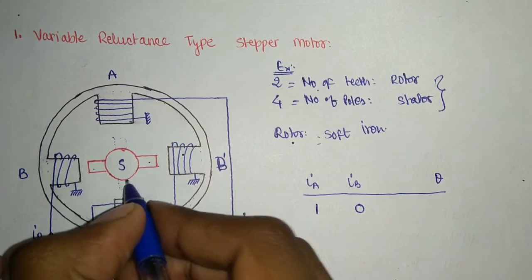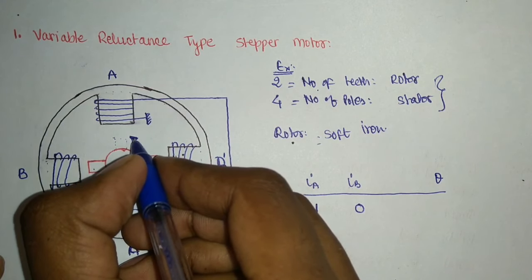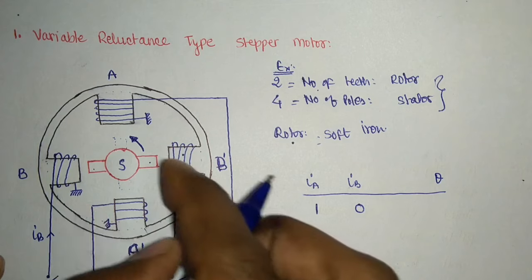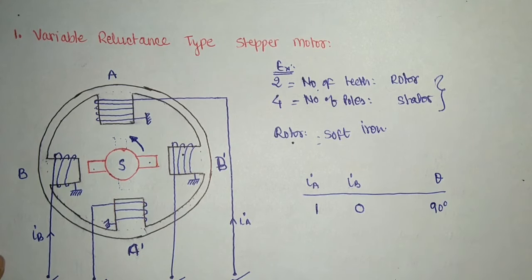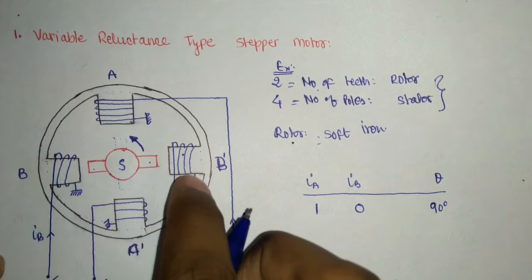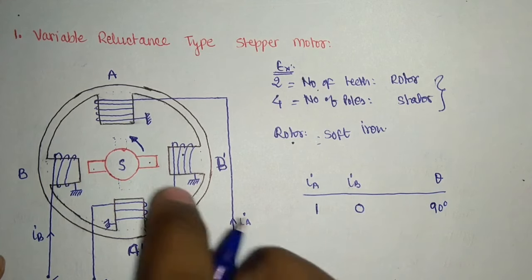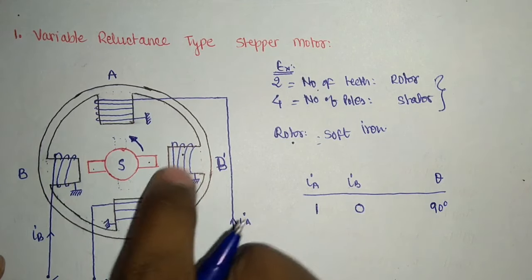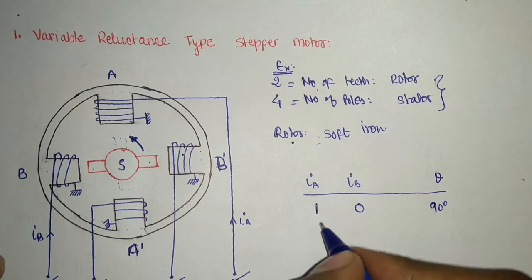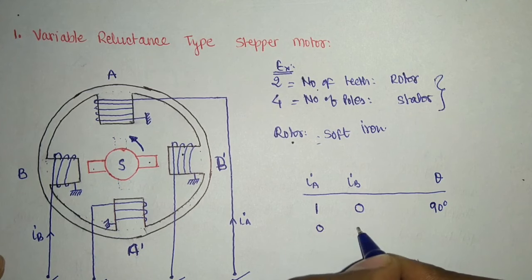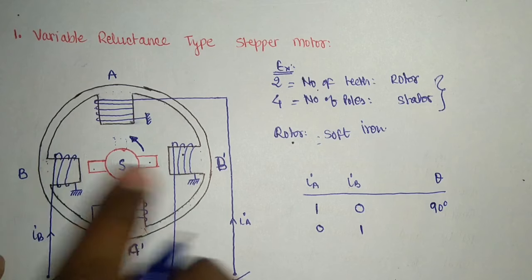So the rotor is going to rotate and align with the magnetized coil — let's call that angle 90 degrees. Initially when there was no current it was zero degrees, so when I_A is non-zero and I_B is still zero, we get a 90-degree rotation. Then when I_A is zero and I_B is provided with current, this coil energizes while the previous one de-energizes, so the rotor gets attracted to the new position.